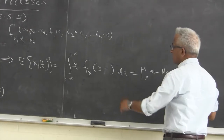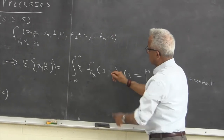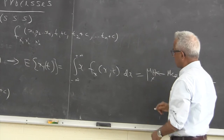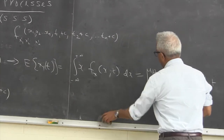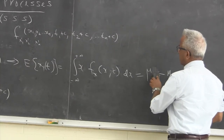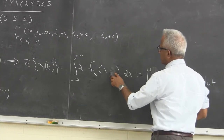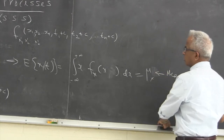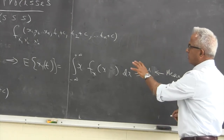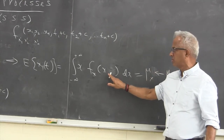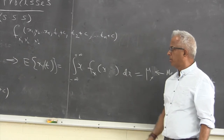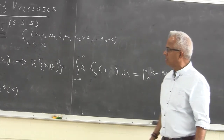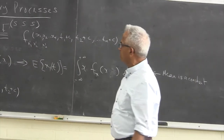Of course if the process is not strict sense stationary, the density function will be a function of t and the mean will be a function of t. In general the mean can be a function of t. Whereas for a strict sense stationary process, the first order density function is independent of t, and consequently the mean is also independent of t.